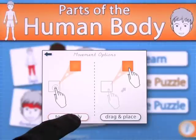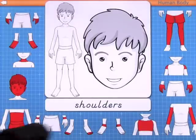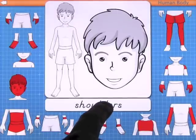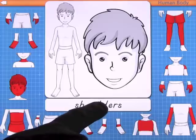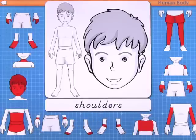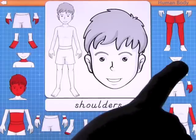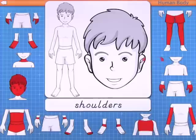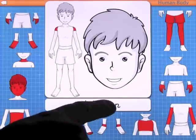Now for the name puzzle, we're going to use touch only to show you a different version. It's a similar concept, except this time a word appears — for example 'shoulders' — and you can touch the word to hear it. Then you find and touch the correct body part on the figure, and it will go into place.